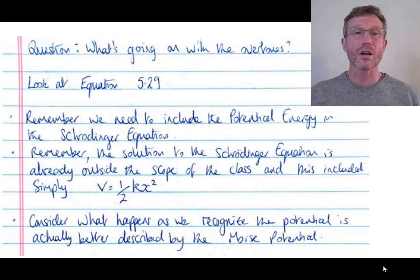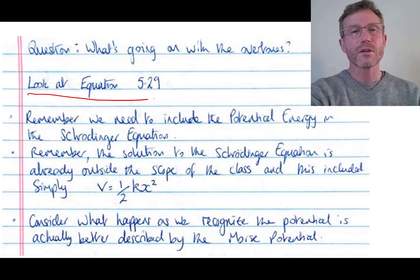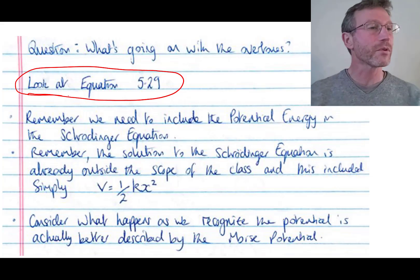One of the questions I heard from a couple of you was really about what's going on with these overtones. What's the issue here? What's happening? Let me try to tie together a few ideas. I want you to think about equation 5.29 in the textbook, that's on page 216. Let's step back from that equation a second and say, well, look,